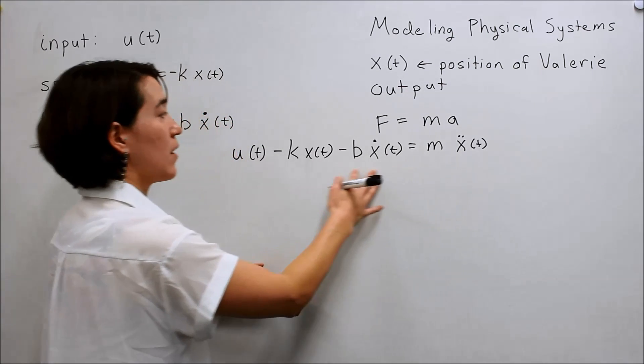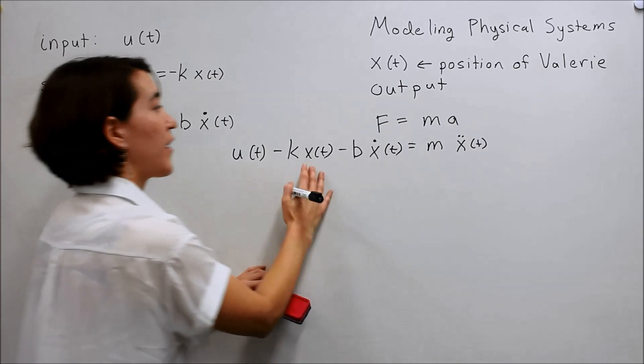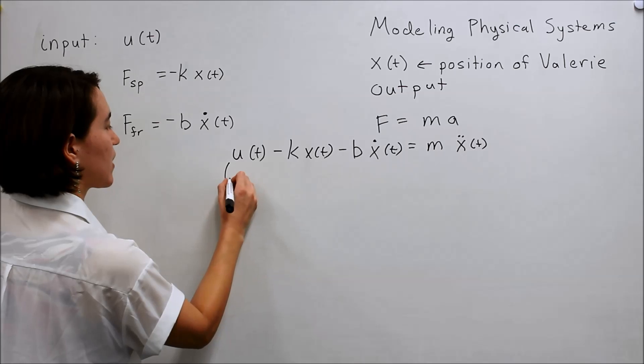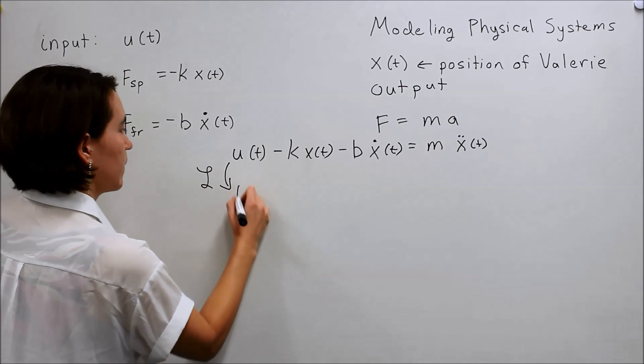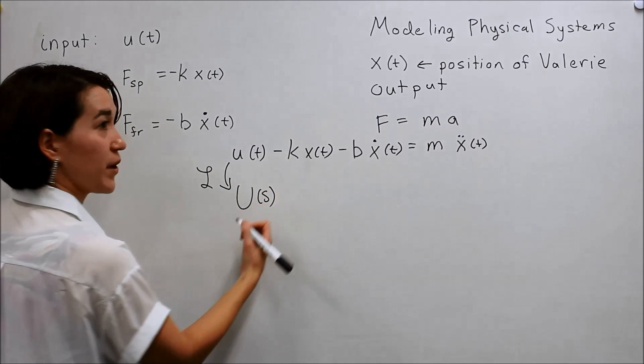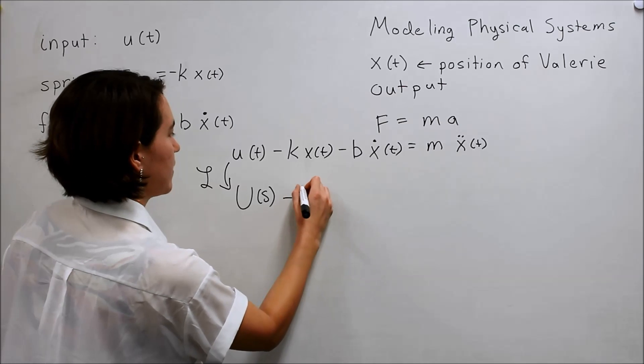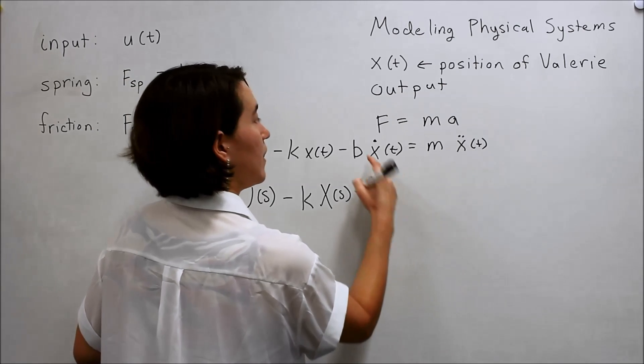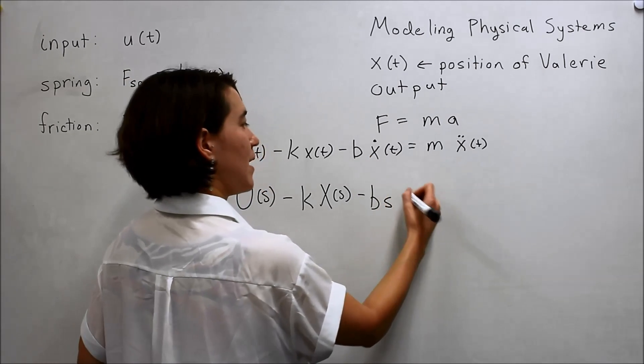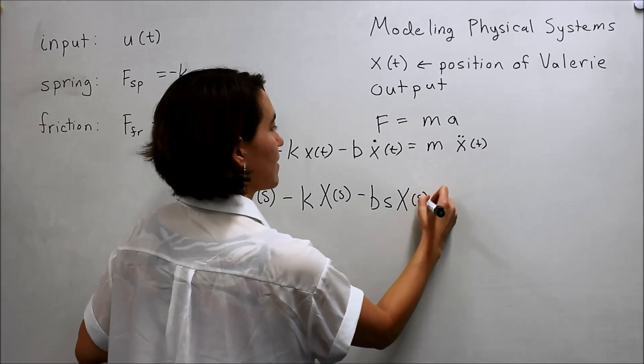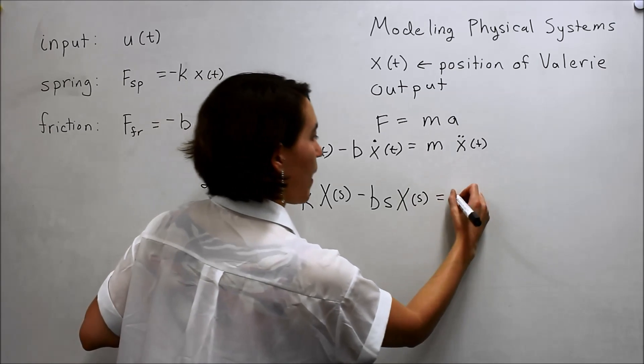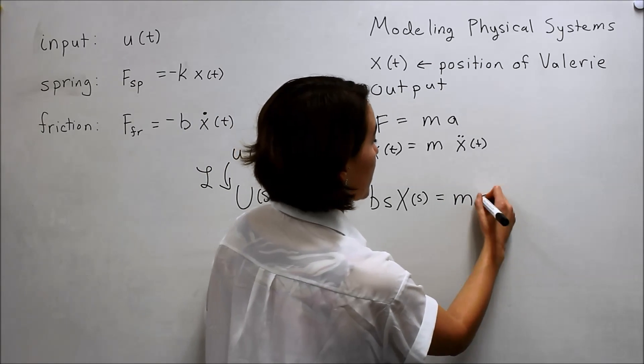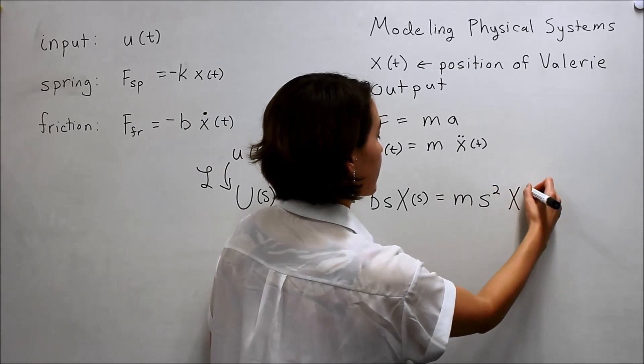So now we can take our Laplace transform and derive the transfer function. U(s) minus kX(s) minus bsX(s) equals, so m our mass, now we're taking the double derivative, Laplace transform, we'll do s squared X(s).